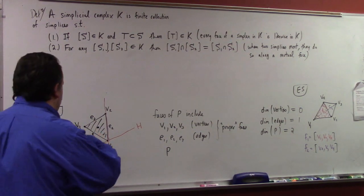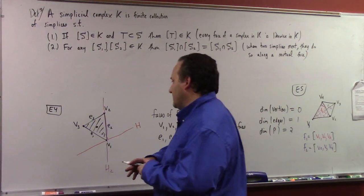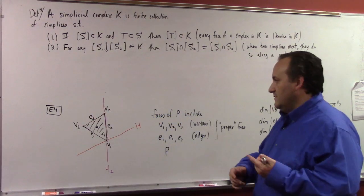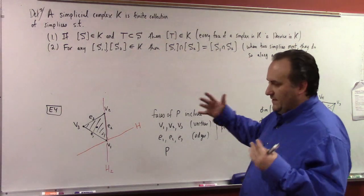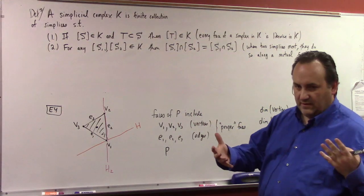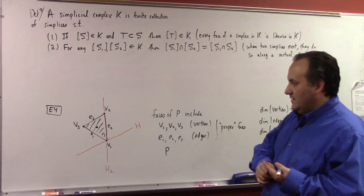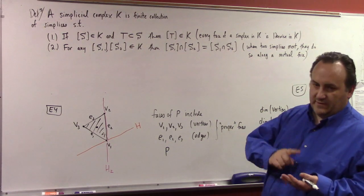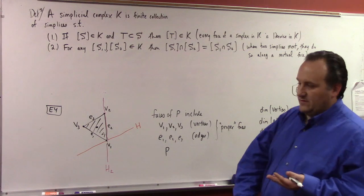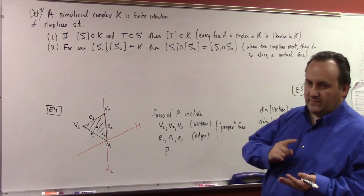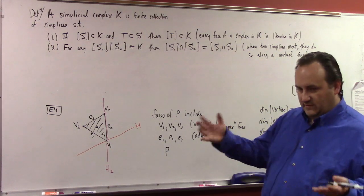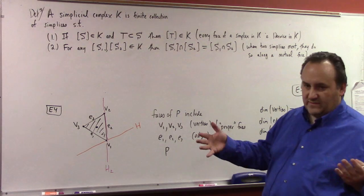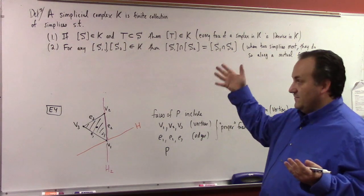You could think of a simplicial complex corresponding to this triangle. It would be a lot of things: it would be the whole thing together P, union with edge one, union with edge two, union with edge three, union with vertex one, union with vertex two, union with vertex three. You can check it out — that set of simplices satisfies these two conditions.